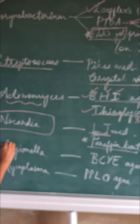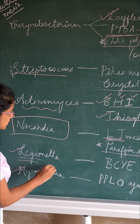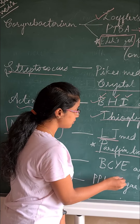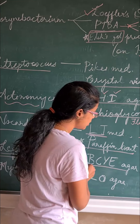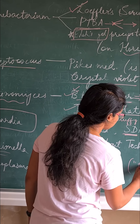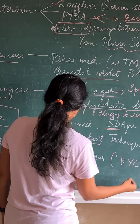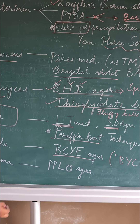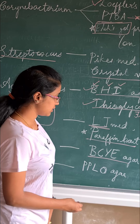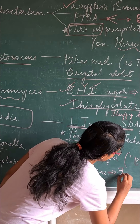For Legionella, the culture medium is BCYE agar — buffered charcoal yeast extract agar. For Mycoplasma, it is cultured on PPLO agar — pleuropneumonia-like organisms agar — which shows fried egg colonies.